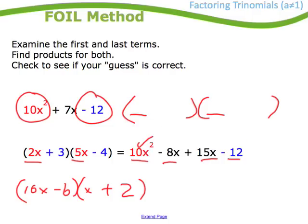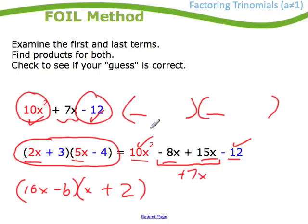Now when I check this, notice that the first term and the last term are correct. It's the only term that I'm really checking on is the middle term. So I take a look at these two. Minus 8 plus 15 gives me positive 7x. And if I look up here, in this case, I guessed it correctly.